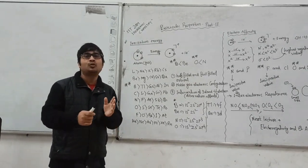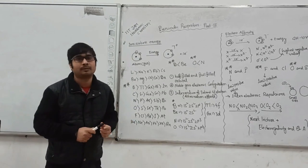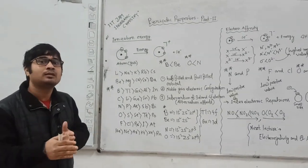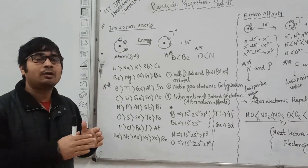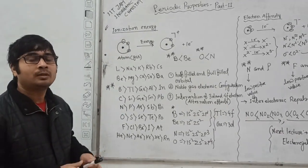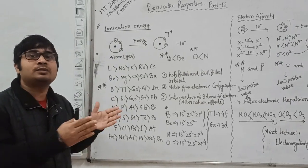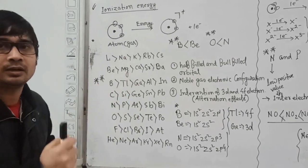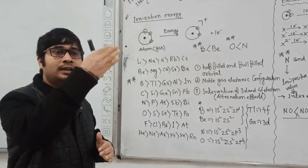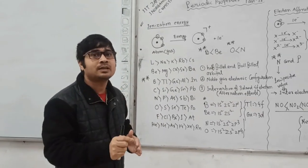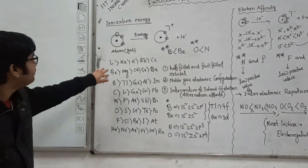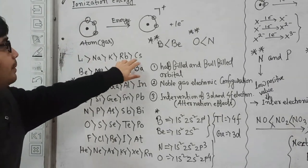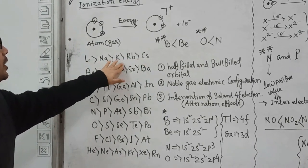What is the trend in the periodic table? In a group, the ionization energy decreases. Why? Because in a group, the size of the atoms increases, and as the size increases, it is easier to remove an electron from the outermost orbital. That's why ionization energy decreases in a group from top to bottom. In general, lithium has the highest ionization energy, followed by sodium, then potassium, rubidium, and cesium. The same trend applies to beryllium, magnesium, calcium, and strontium.